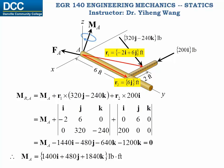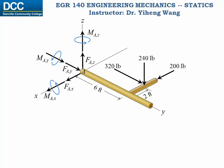From the calculation, the couple moment vector M_A equals 1,400I plus 480J plus 1,840K in the unit of pound-foot. Alternatively, we can solve this problem using scalar formulation.